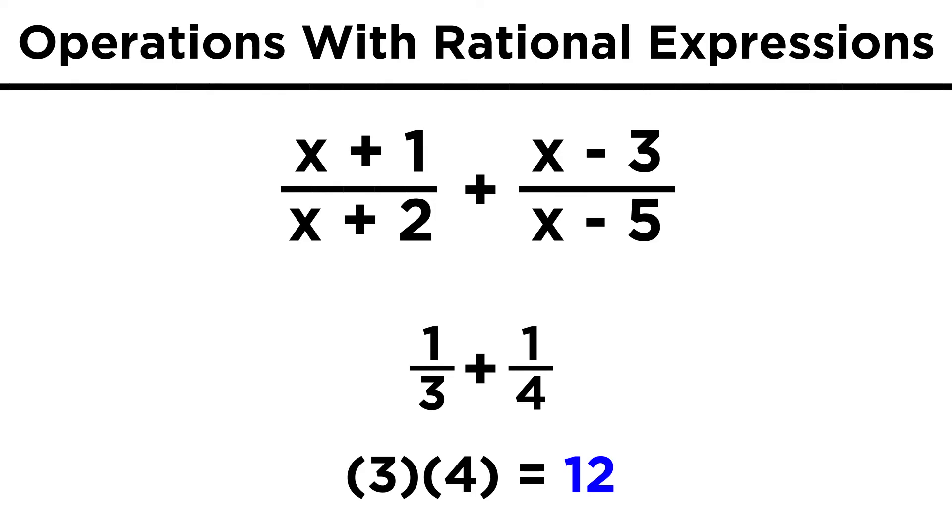If we want both of these to be over twelve, we just multiply one-third by four over four, giving us four-twelfths, and we multiply one-fourth by three over three, giving us three-twelfths.